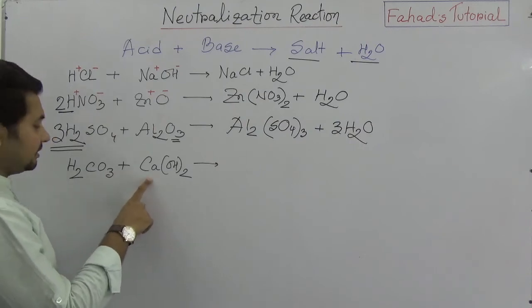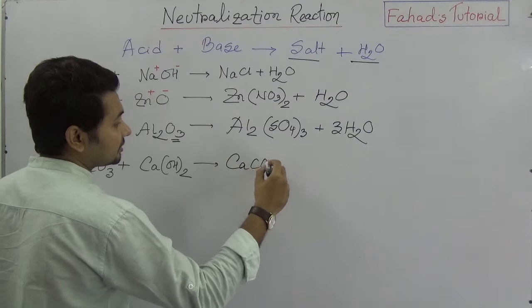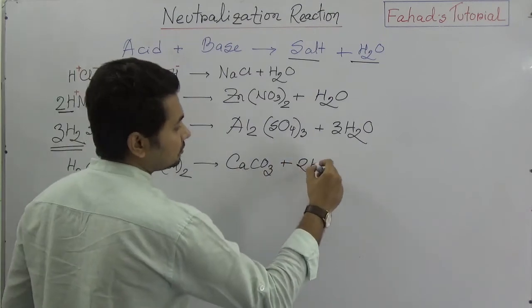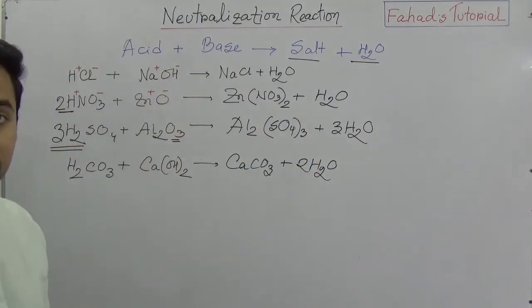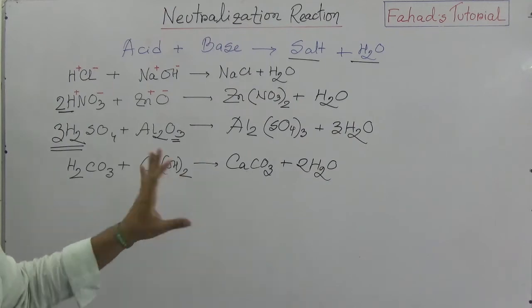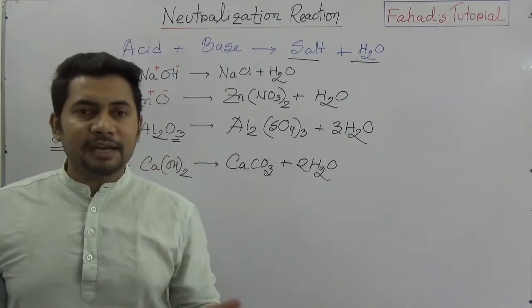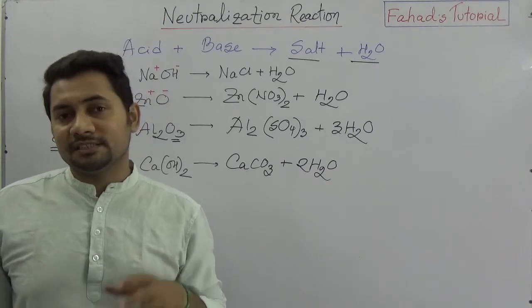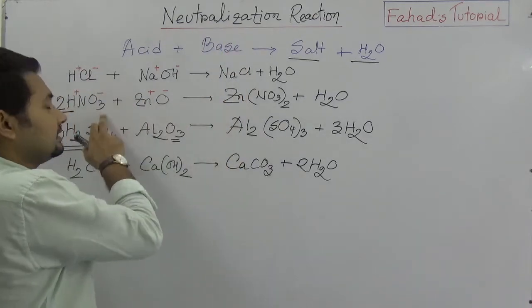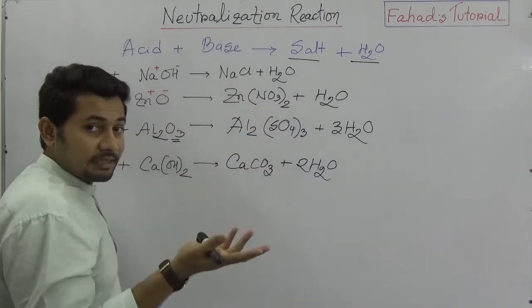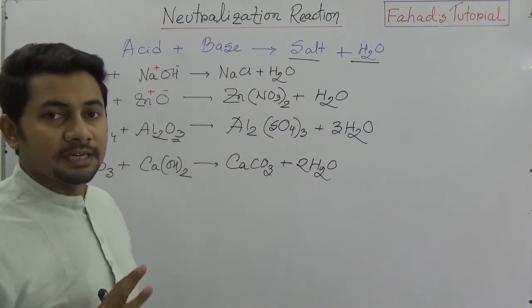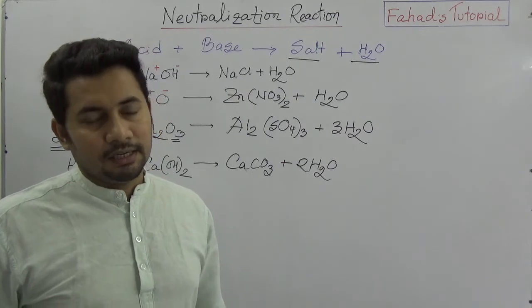In this case, this is carbonic acid and calcium hydroxide. Calcium carbonate will be the production and then 2H2O, 2 molecules of hydroxide water. Simply I have given you 4 examples and now you can practice number of reactions based on neutralization reactions. If you took 10 bases and react with even 5 acids, there would be 50 reactions, neutralization reactions.